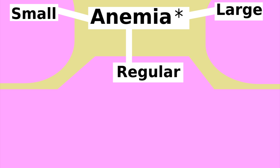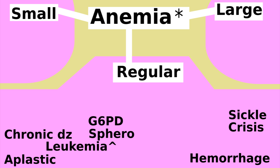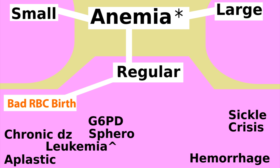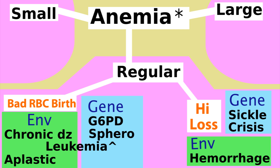However, if the test shows regular-sized cells, there are many more choices. We will categorize these choices into bad red blood cell birth or loss, and subdivide the categories into, again, environment or genes.